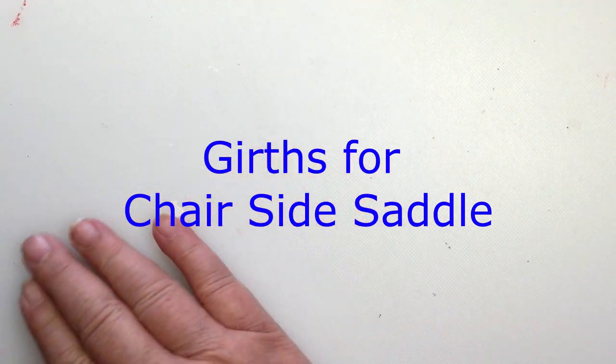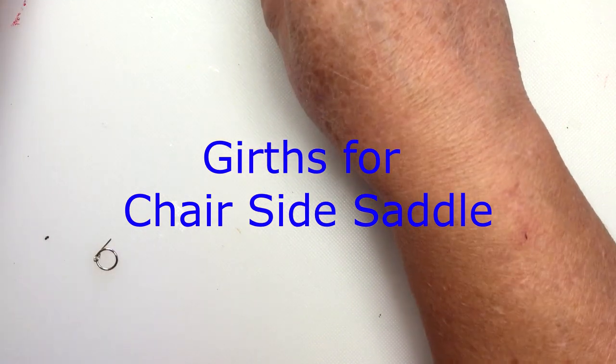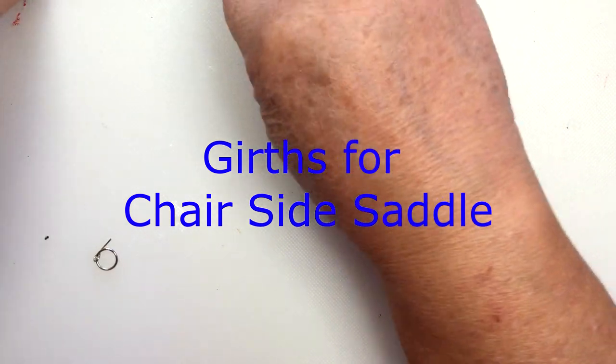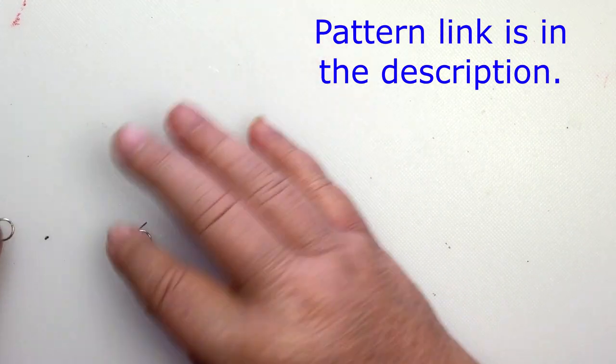Horse Tack School, my name is Carrie, and today we're gonna make the cinches for the side saddles. These are the chair style historical side saddles and it's just gonna be really quick because it's basically a western cinch.